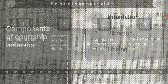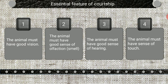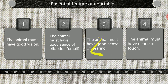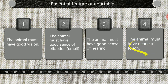Now we move on to the essential features of courtship behavior. There are four important essential features. The animal must have good vision because the courtship behavior involves visual displays and courtship dance, so to attract the opposite sex, each mate has a good sense of vision. The animal must have a good sense of olfaction — the courtship behavior involves the production of pheromones, for which they have a good sense of olfaction. The animal must have a good sense of hearing, as courtship behavior involves courtship calls. The animal must also have a good sense of touch, as courtship behavior involves licking of the abdomen and tapping by the mate.